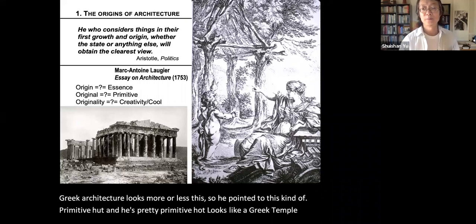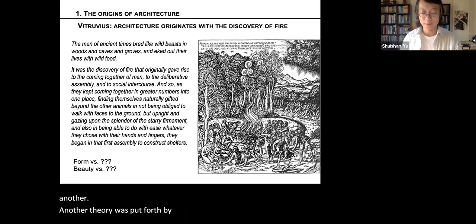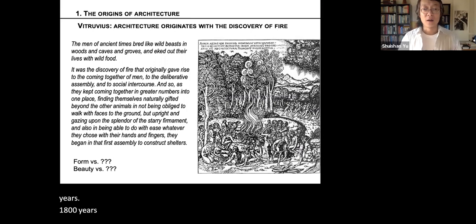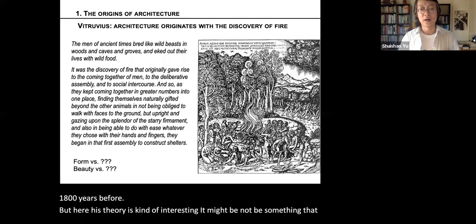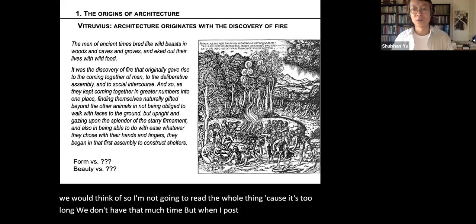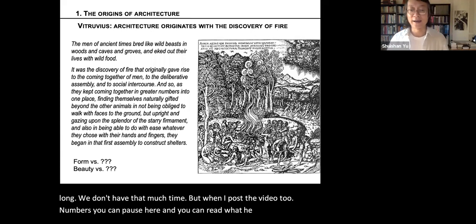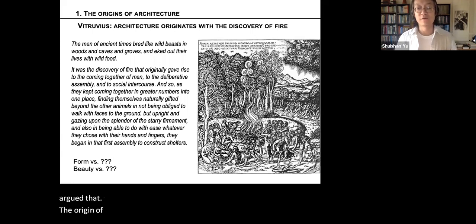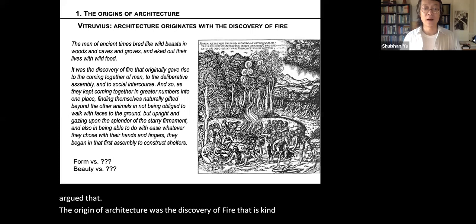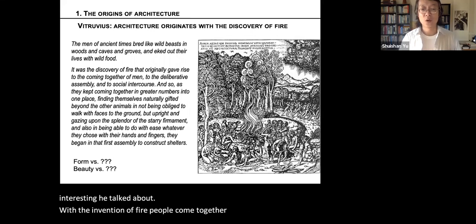Another theory was put forth by Vitruvius, almost 2,000 years before Laugier. His theory is quite interesting — it might not be something we would immediately think of. He basically argued that the origin of architecture was the discovery of fire. He talked about how with the invention of fire, people came together and started to socialize.